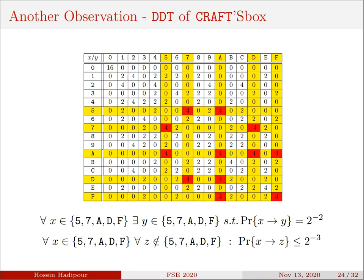Since as you can see, the CRAFT S-box is a differentially 4-uniform S-box. Secondly, for each x in this set and for each z out of this set, the probability of x to z is non-optimal.